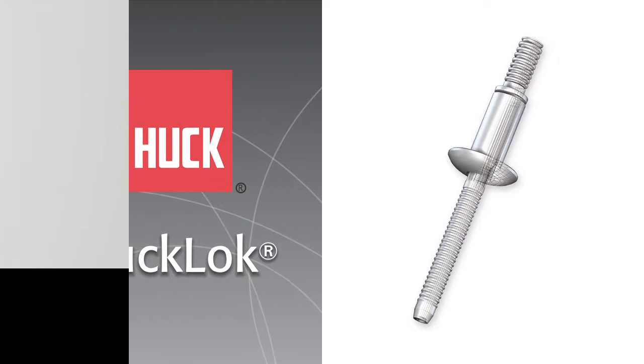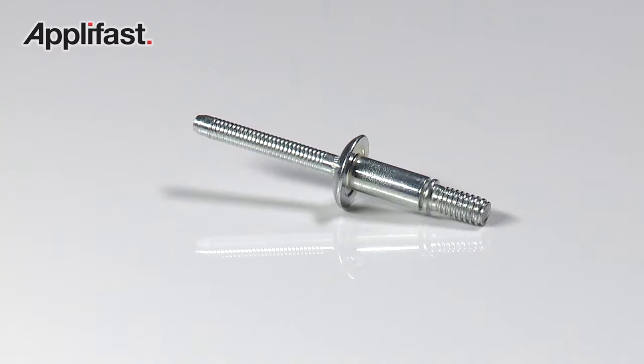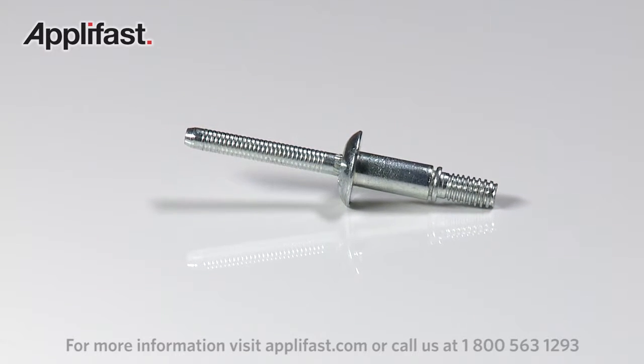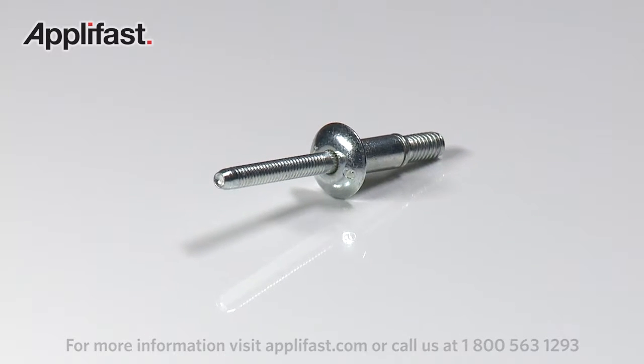The HuckLock Structural Bulbing Fastener combines the best of both fastening worlds, high shear strength and high clamping force. What makes HuckLock different is its wide grip range and unique double locking action.